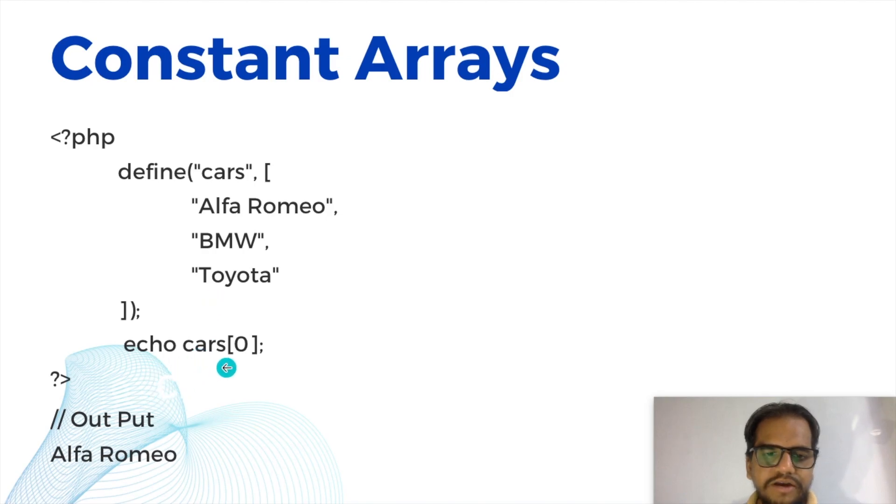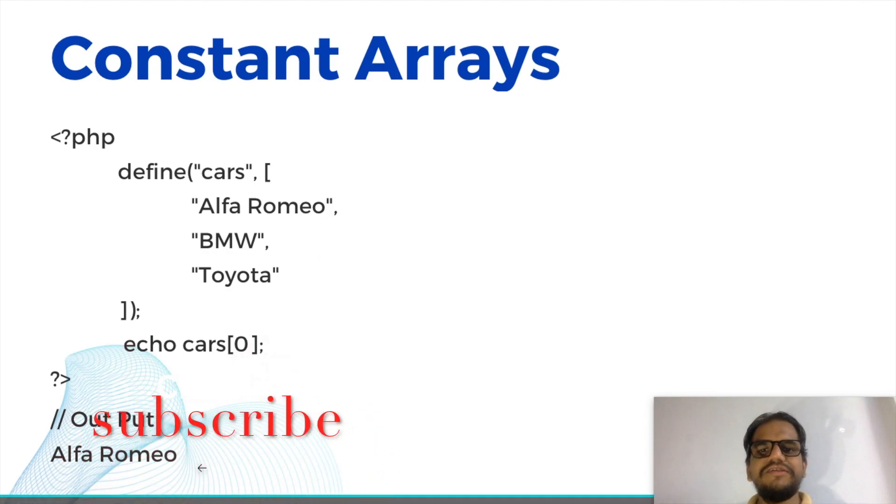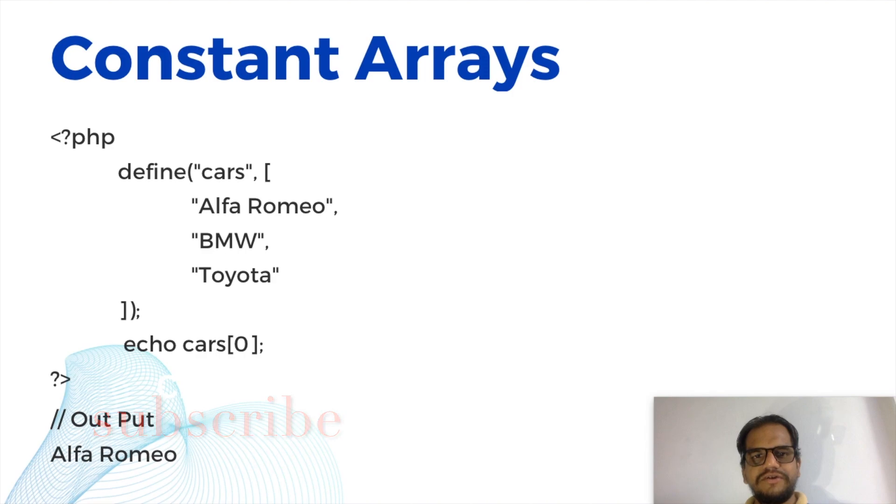And we can echo cars and we give the key name is zero. So zero means this one they are printing. Output will be the same. So this is the way to write down the constants.